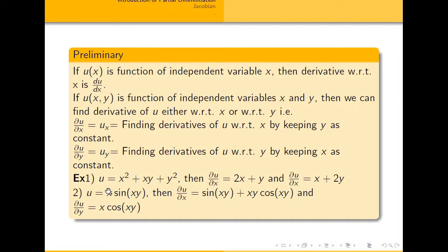Applying the product rule: take the partial derivative of the first function (x) keeping the second as constant, plus x times the partial derivative of sin(xy). The derivative of sin(xy) with respect to x is cos(xy)·y. Similarly, finding the partial derivative with respect to y: sin(xy) as is, derivative of the angle xy with respect to y is x, so the answer is x²·cos(xy).